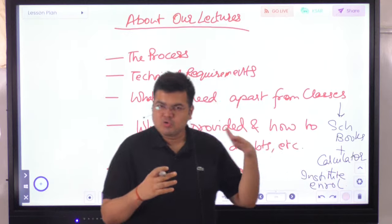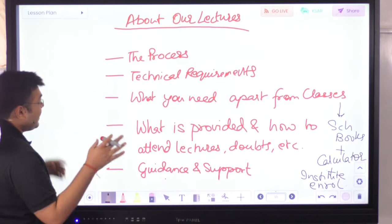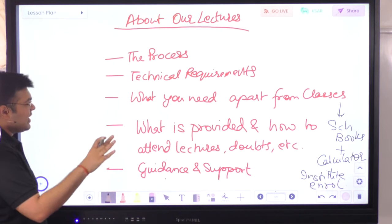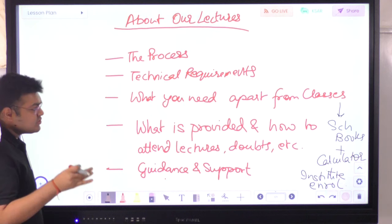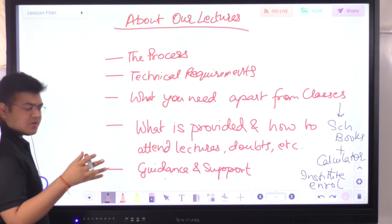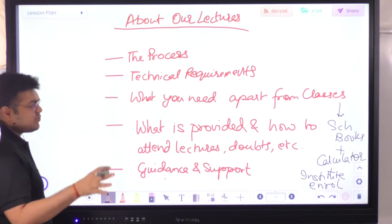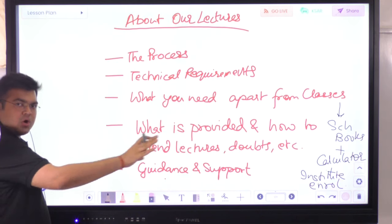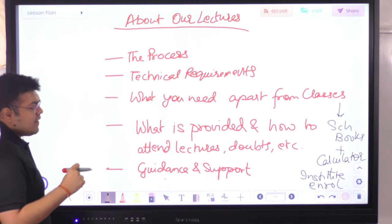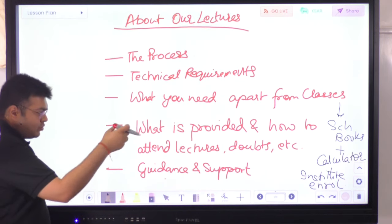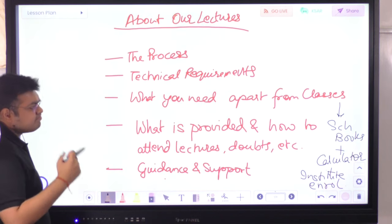Let's quickly go through the details about how to begin with your classes, lectures, and everything so we can start studying. About the lectures — the enrollment process, technical requirements, laptop needs — apart from classes, you'll need the Schweizer textbooks, four or five depending on which exam level you're taking, and a Texas Instruments BA2 Plus calculator — either the standard or professional version.